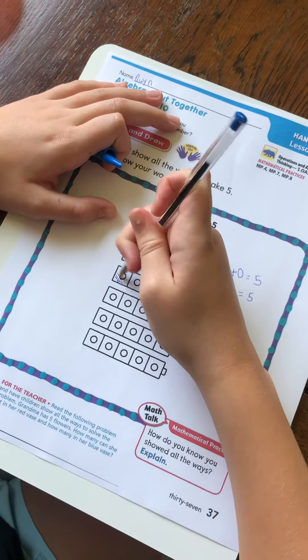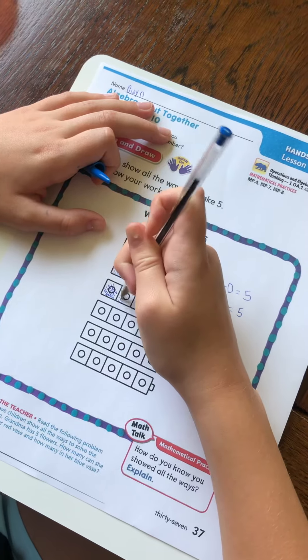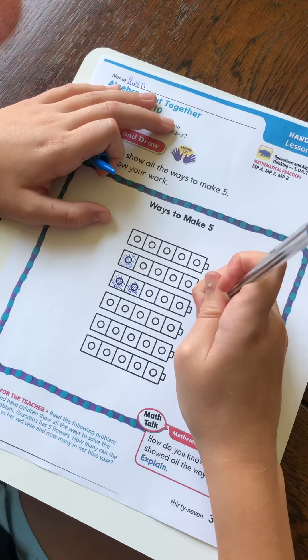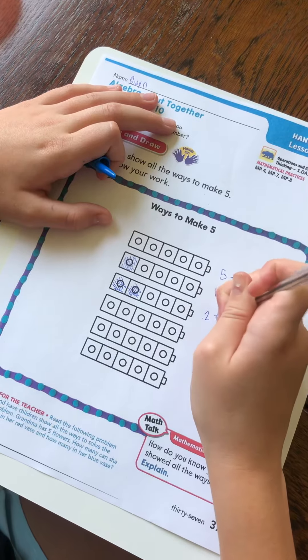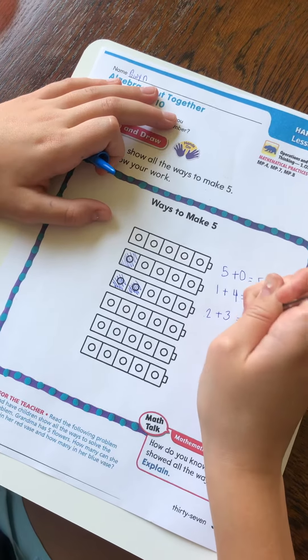Right here I'm gonna color in 1, 2, 2 blocks, which means 2 plus 3 equals 5.